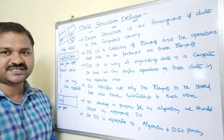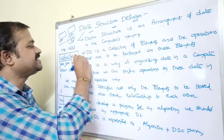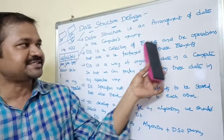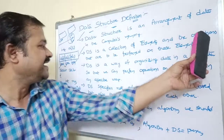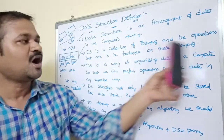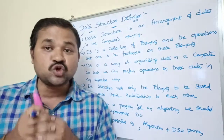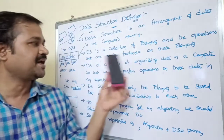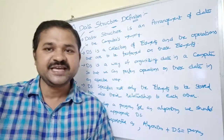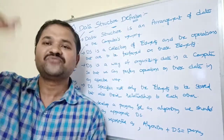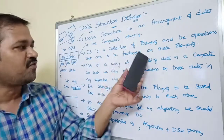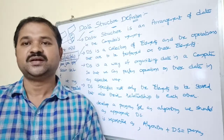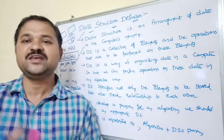Now the second definition: a data structure is a collection of elements and the operations that are to be performed on those elements. For example, a stack is a data structure — it contains a collection of elements and we can perform push and pop operations on it. A queue is a data structure where we can perform enqueue and dequeue operations.